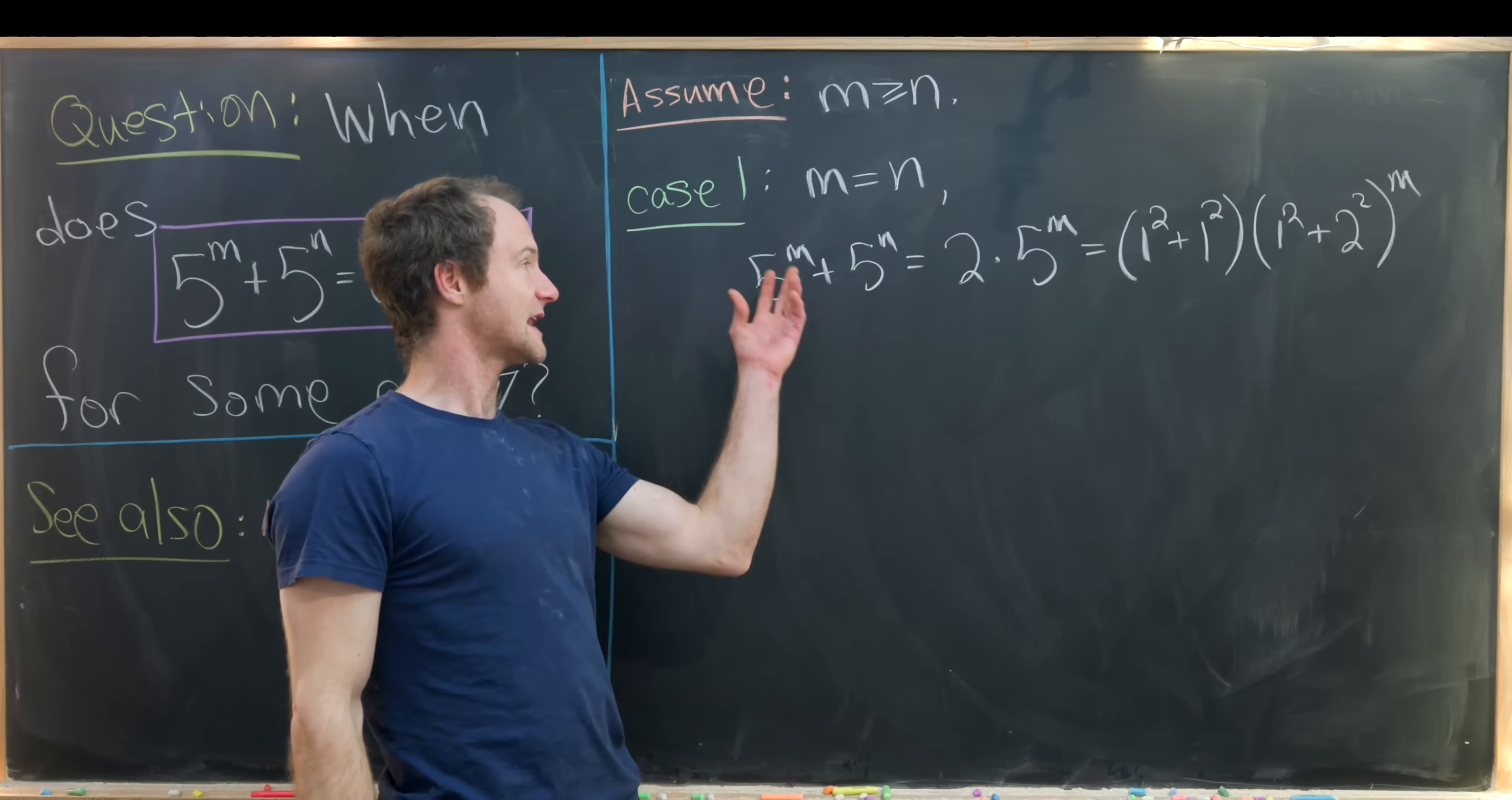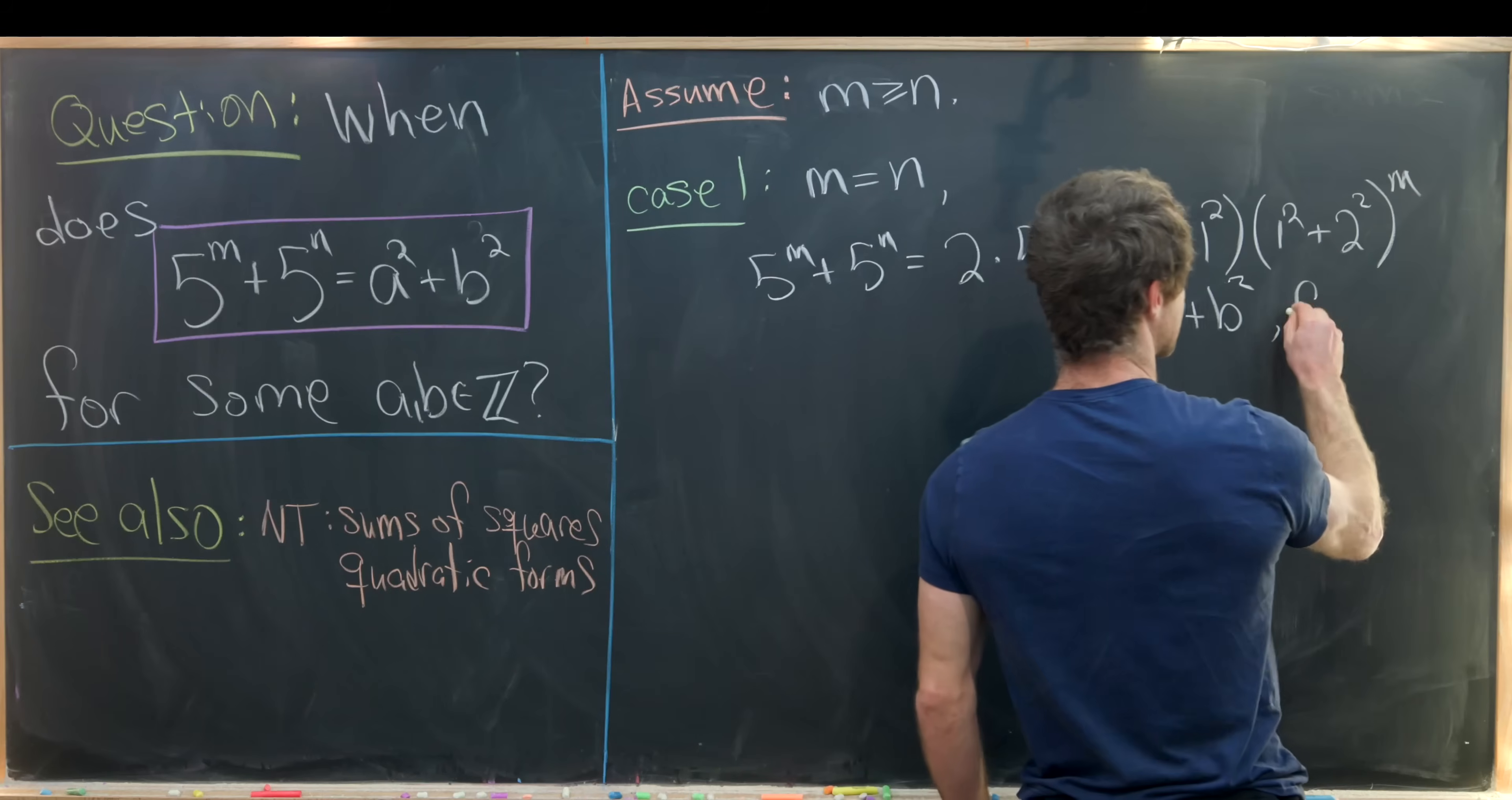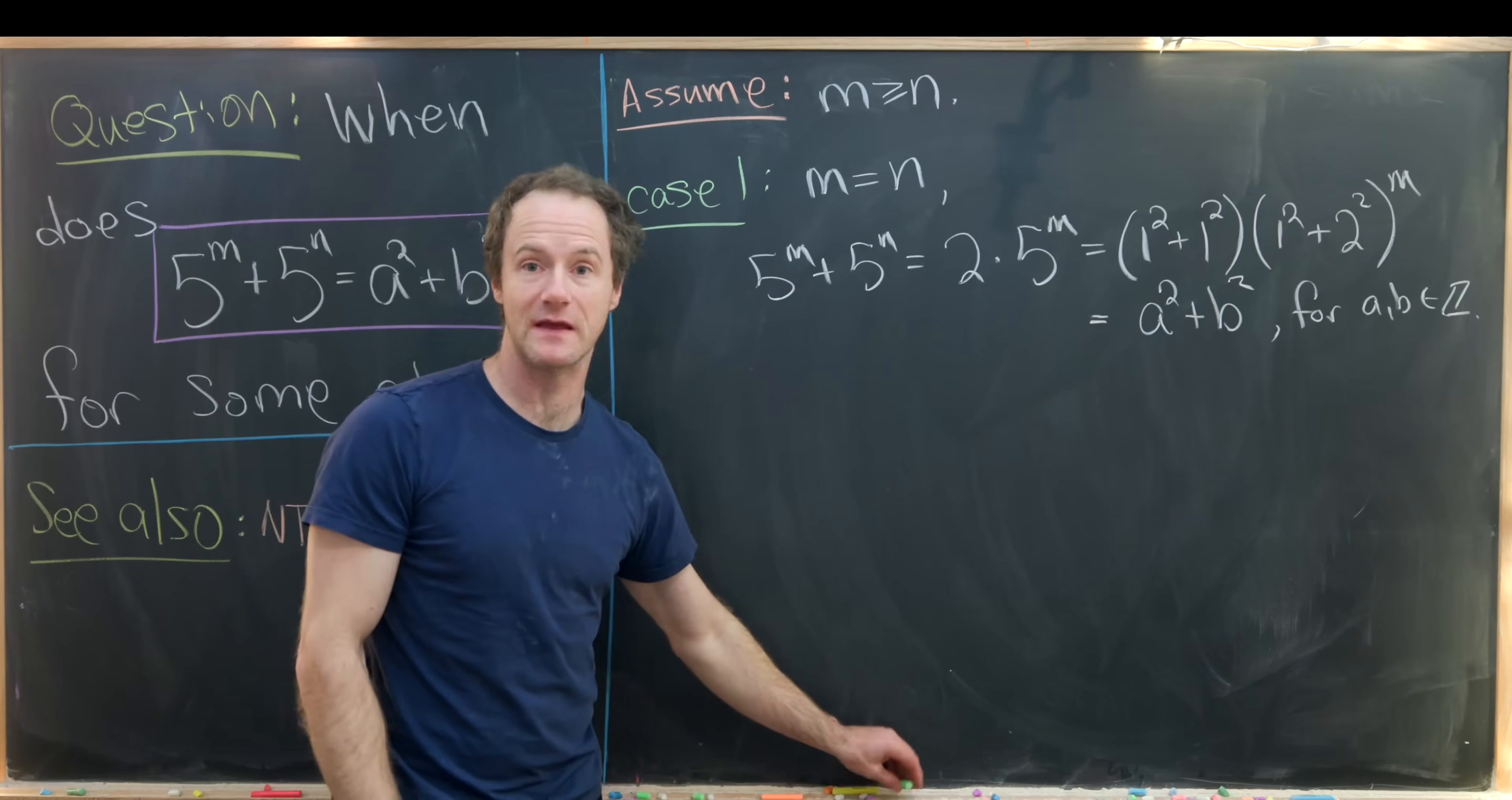So we've taken our object and written it as the product of things that are each the sum of two squares. So that tells us that this is in fact equal to the sum of two squares for some values a and b. Now it's hard to write down exactly what those are, but by our proposition we know they must exist.